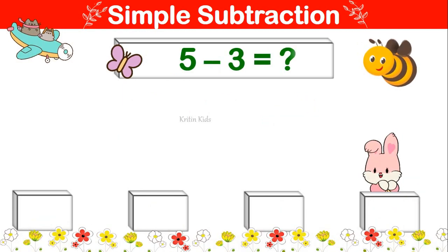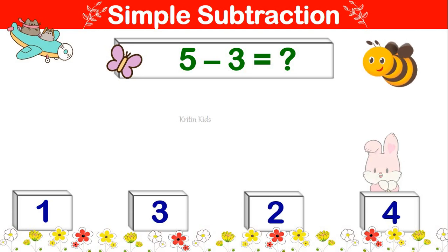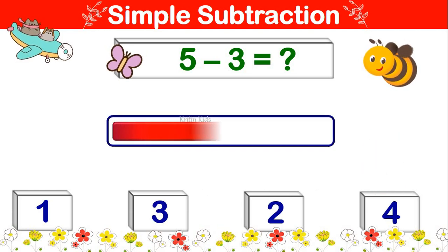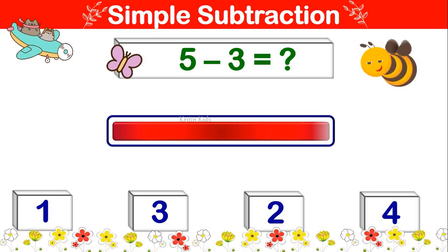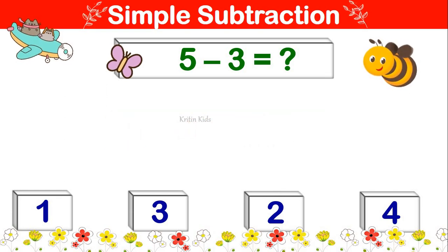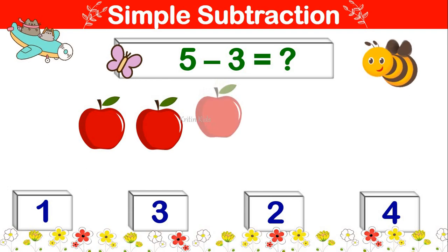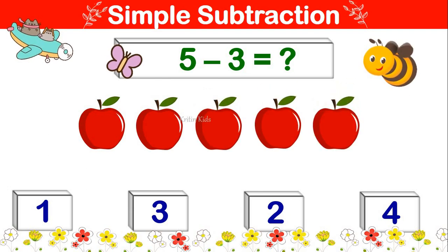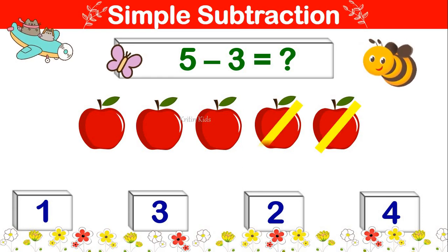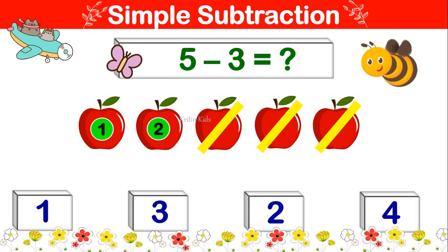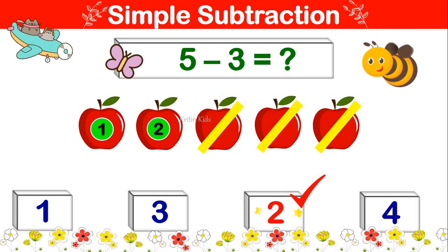5 minus 3 is equal to. Let's take 5 and subtract 3 from it. 1, 2, 3, 4, 5. Now let's subtract 3 from it. 1, 2, 3. Remaining is 1, 2. 5 minus 3 is 2.